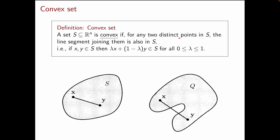A subset S of Rn is said to be convex if, for any two distinct points in the set S, the line segment joining them is also in S. The set here on the left is convex. To see this, we look at any two points X and Y in the set and we look at the corresponding line segment joining them. It seems clear from the picture that no matter how you pick X and Y, the whole segment will be contained in S. Therefore, this set is convex.